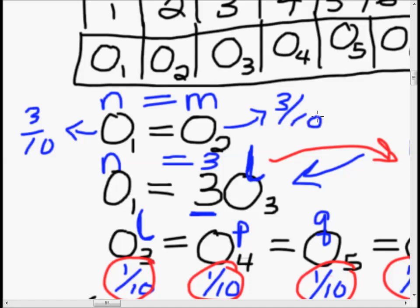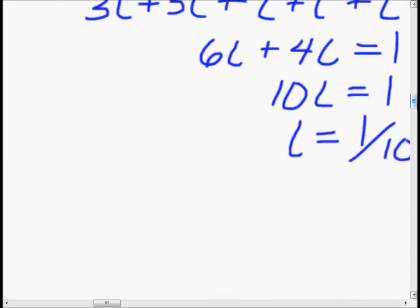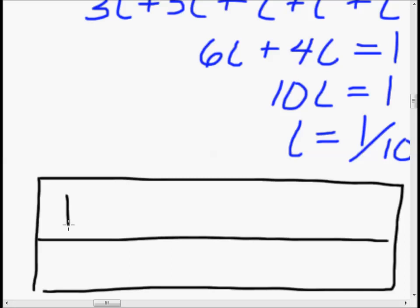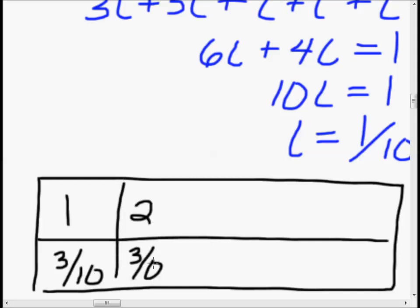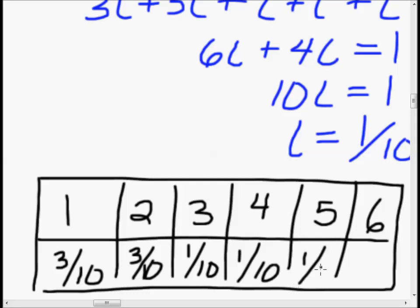Let's draw a final table. Outcome 1 has probability 3/10, outcome 2 has probability 3/10, and outcomes 3, 4, 5, and 6 each have probability 1/10. And that's what they were asking: what are the outcome probabilities for each number on the weighted die? That's it — that's the complete answer.